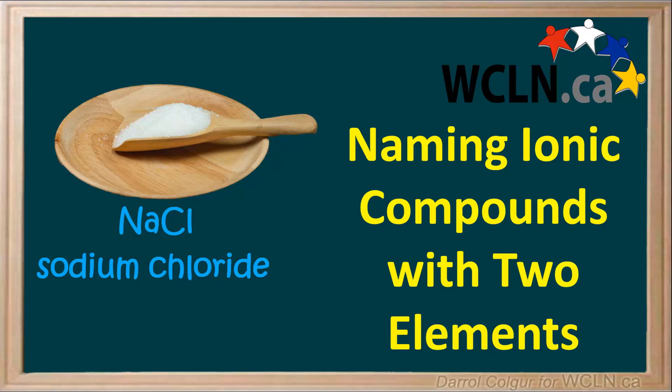Here, we'll explain how to name ionic compounds that consist of two elements. Before we go through the rules and give you examples, we'll point out a few important things about the periodic table we're given.